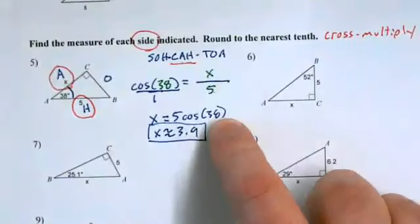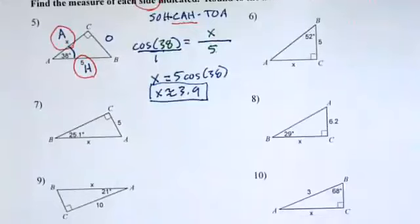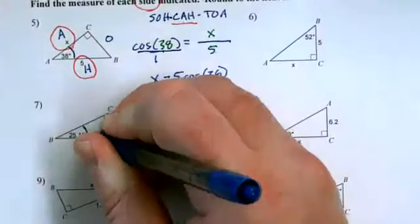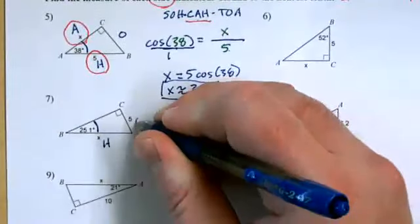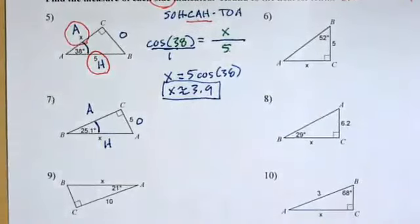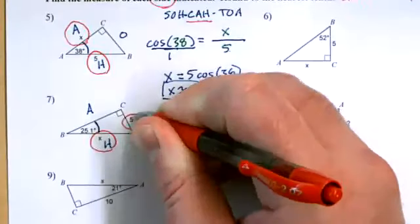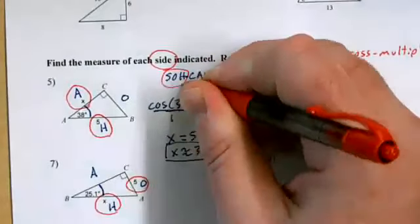Sometimes you have to do an extra step of algebra. I want to pick one where we have to do that. Let's do number 7 together. Please stop me at any point if you've got questions. I'm going through this kind of quickly because we've been spending some time doing this already. But stop me if you've got questions. Okay, number 7. Mark your angle. Label your sides. Hypotenuse. Opposite. Adjacent. We need to pick our trig function here. We are dealing with, this time, hypotenuse and opposite. Which one has hypotenuse and opposite? That's going to be a sine equation this time.